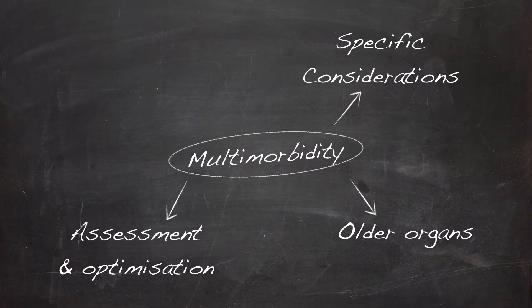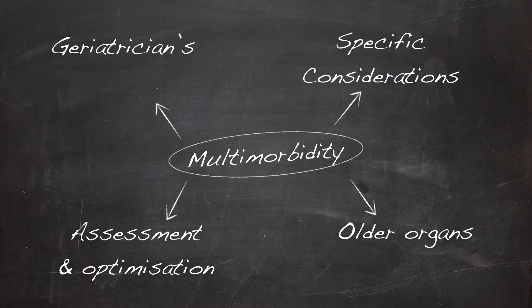Finally, in order to illustrate how organ-specific guidelines require interpretation in the context of multimorbidity, we examine how a geriatrician might approach example clinical scenarios and discuss the preoperative assessment and management in these cases.